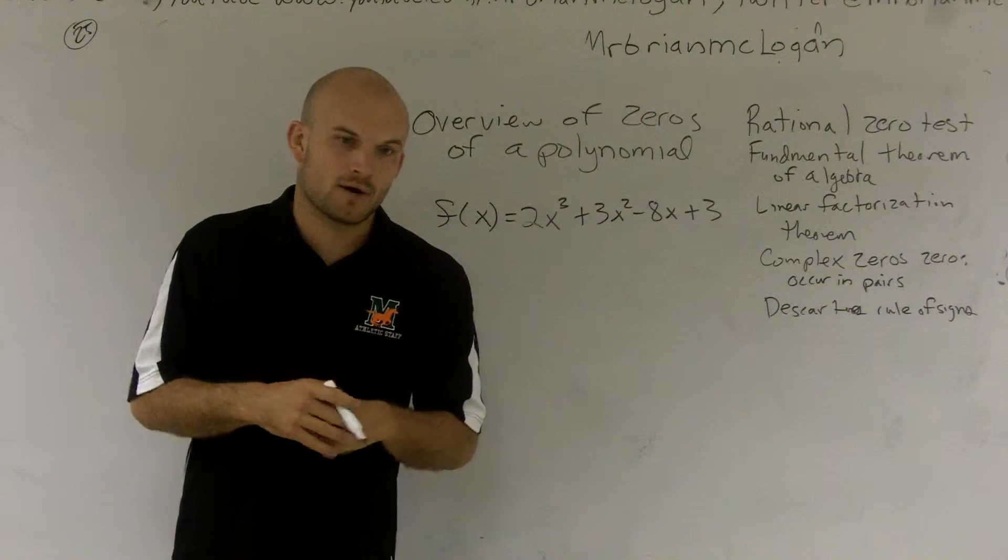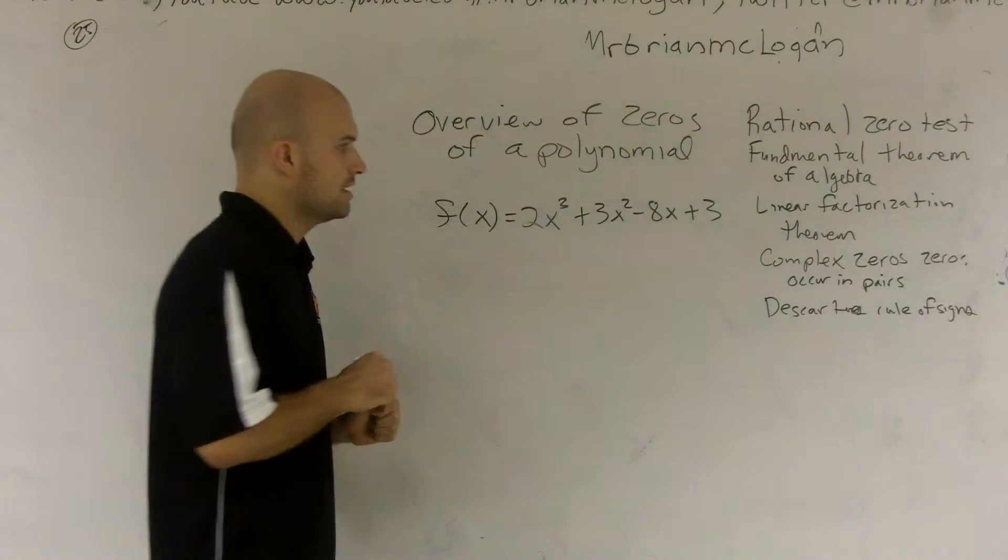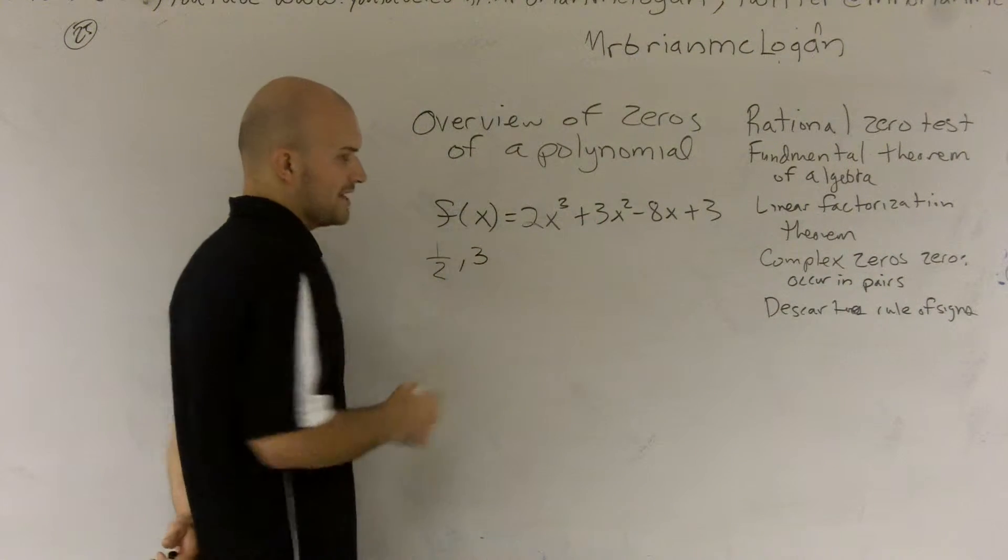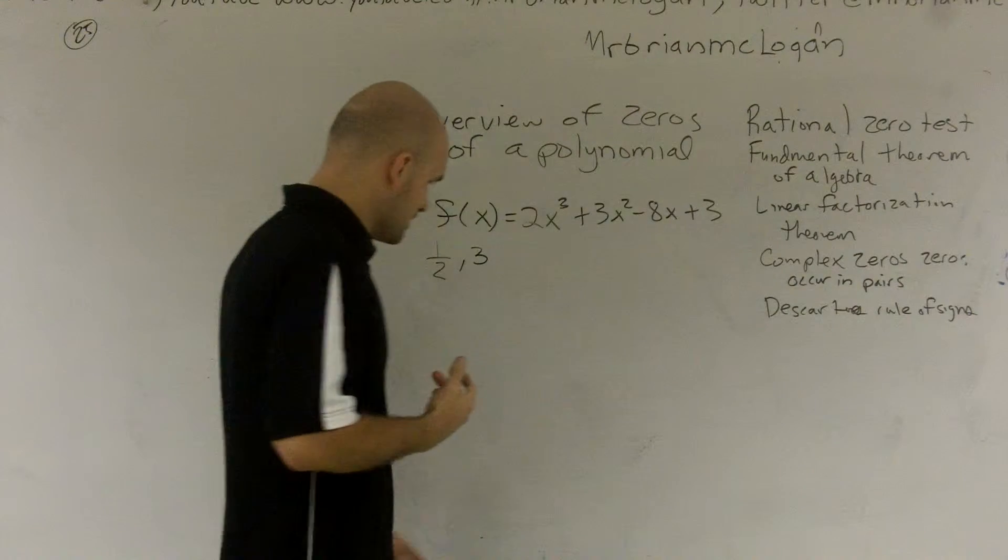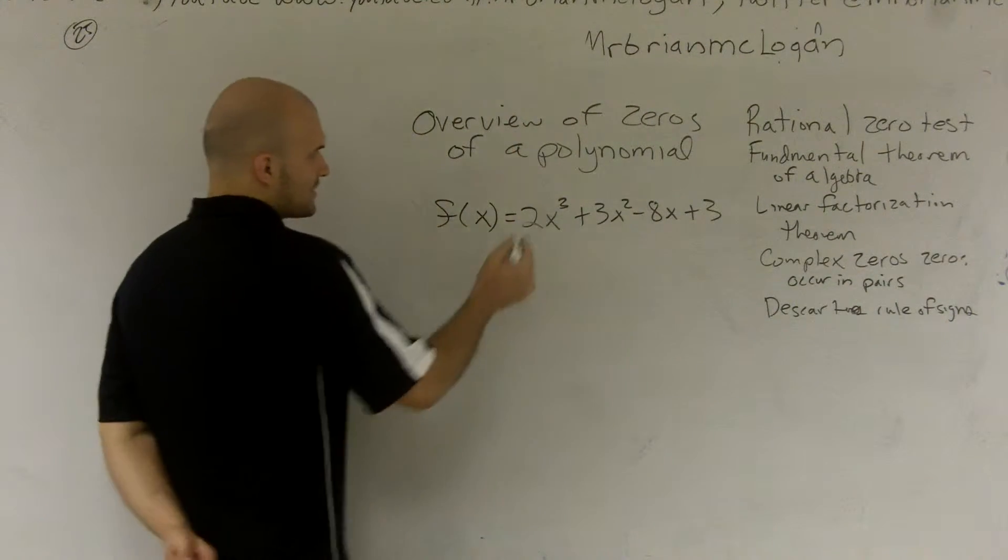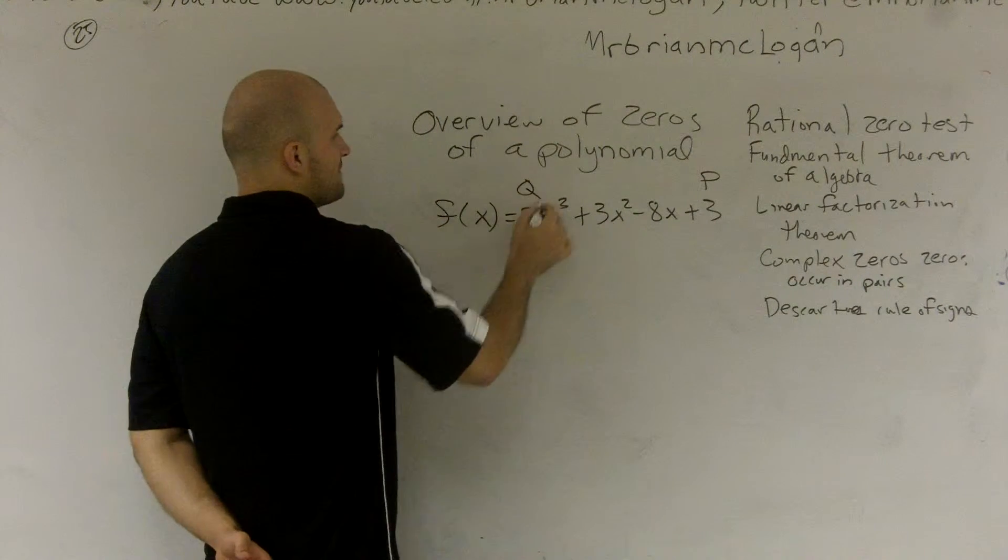Now, there's a couple other tests I want to talk about. First one is how to determine the number of rational roots. Rational roots are fractions, one-half, three, anything we can write as a rational number. So the Rational Root Test, what that tells us to do is we take the factors of p and divide it by the factors of q.